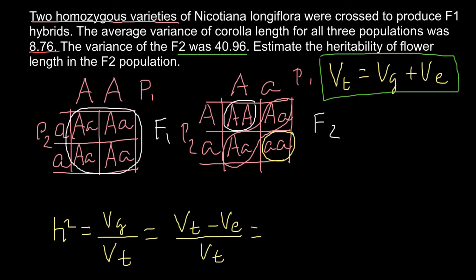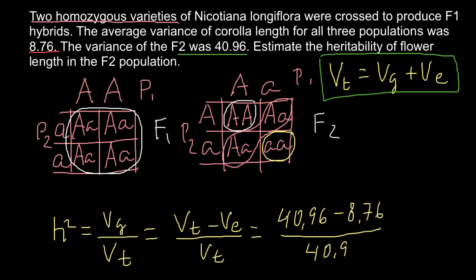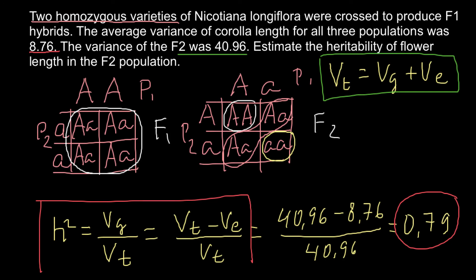Plugging in the numbers: h² equals (40.96 minus 8.76) divided by 40.96, which gives a heritability of 0.79. This is our answer. Memorizing these two formulas will allow you to solve many similar problems you may encounter on your exam.